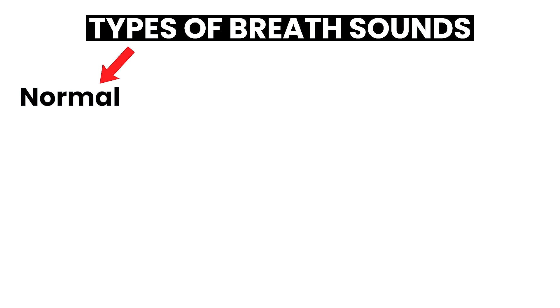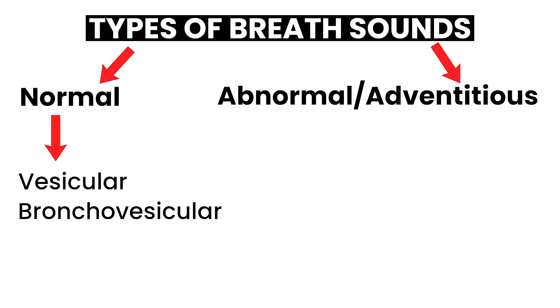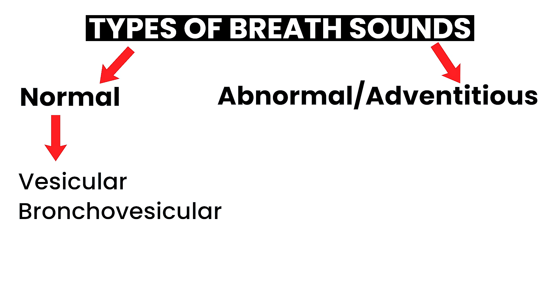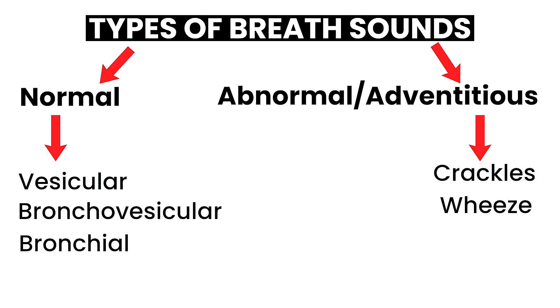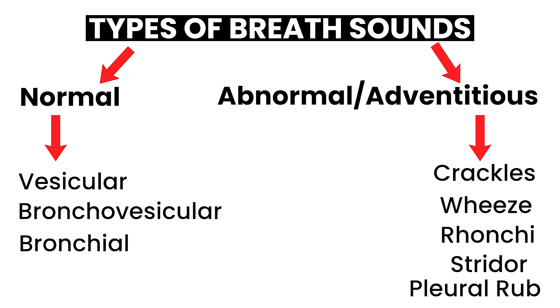Whenever we talk about breath sounds, we categorize them into normal breath sounds and abnormal or adventitious breath sounds. In normal, there are three sounds: first, vesicular breath sounds; second, bronchovesicular; and third, bronchial. Whereas in adventitious, there are crackles, wheeze, ronchi, stridor, and pleural rub. These are the basic and main adventitious or abnormal breath sounds.